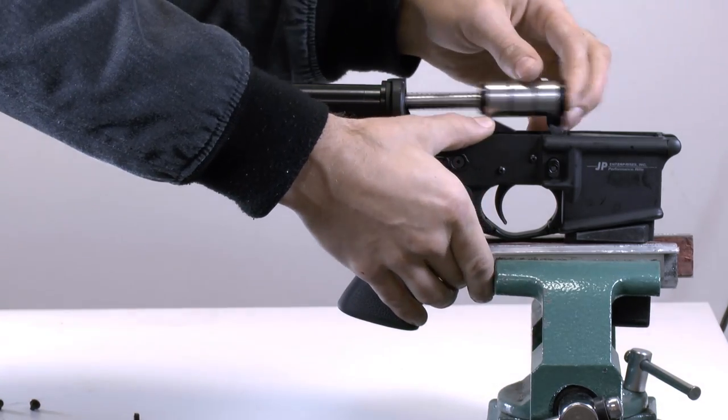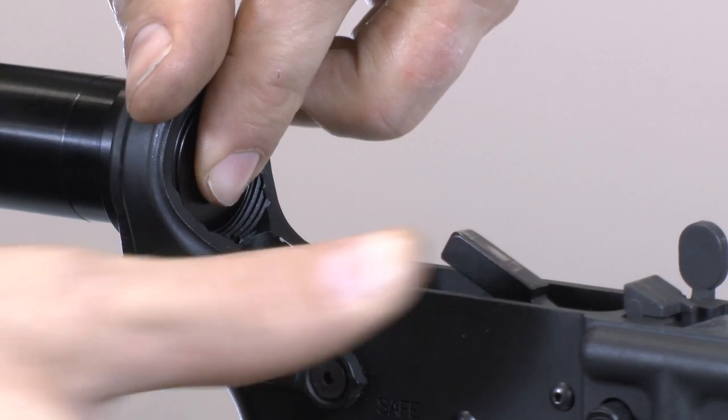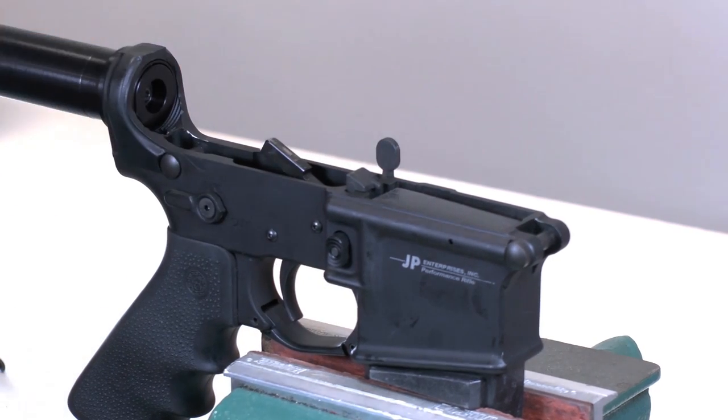Depending on your trigger setup, you may have to depress the hammer slightly to allow enough clearance. With the SCS installed, you can now reassemble your rifle.